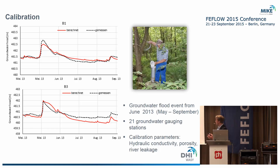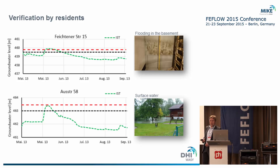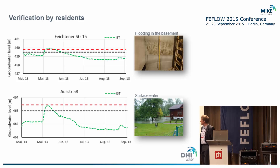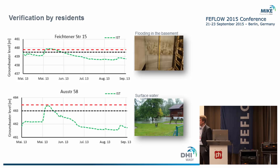That was the event we were most interested in. We calibrated hydraulic conductivity, porosity, and river leakage. Then, because of the short calibration time series, we also performed a verification using information from the inhabitants about basement flooding. The black line shows the bottom of the basement, the red line is the water level reported by the inhabitants, and the green line is the calibrated water level. The inhabitants confirmed the timing and water levels fitted very well.